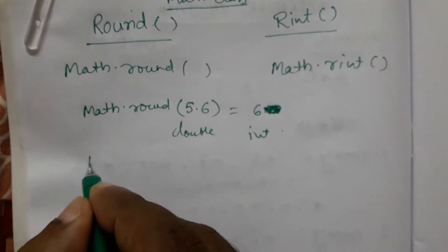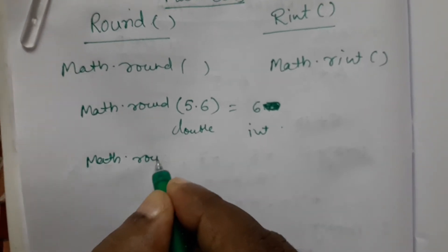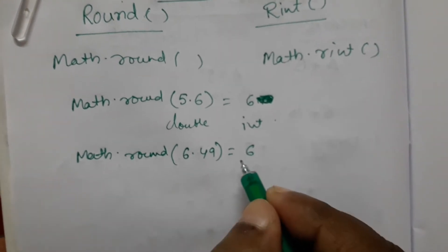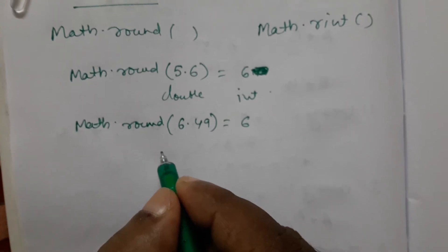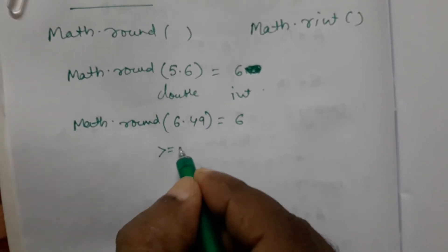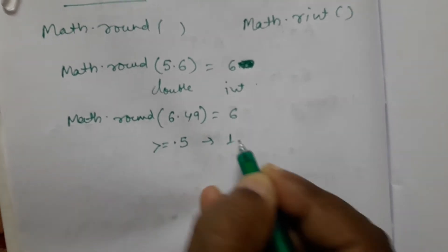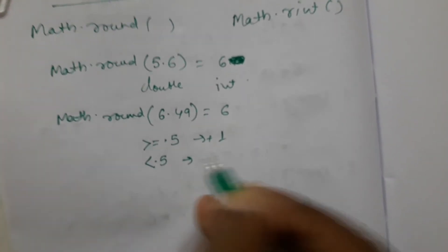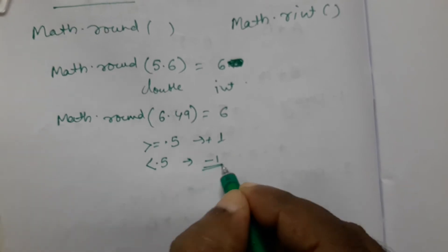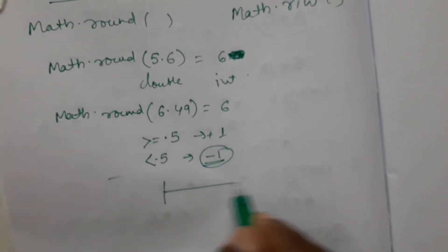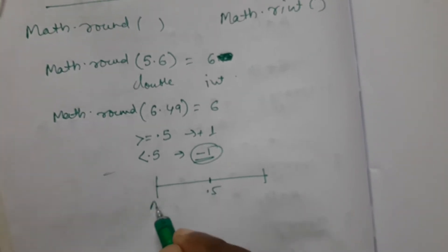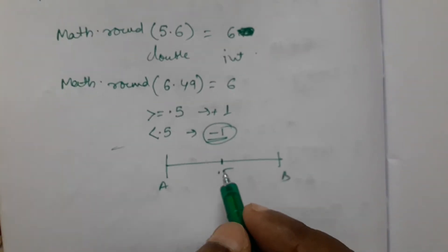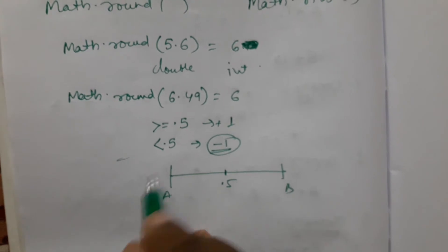Similarly, Math.round(6.49) will be 6, because the rule is: if the decimal part is greater than or equal to 0.5, the result becomes the next integer; if it is less than 0.5, it stays at the lower integer. So 0.5 is the boundary — at or above goes up, below stays down.